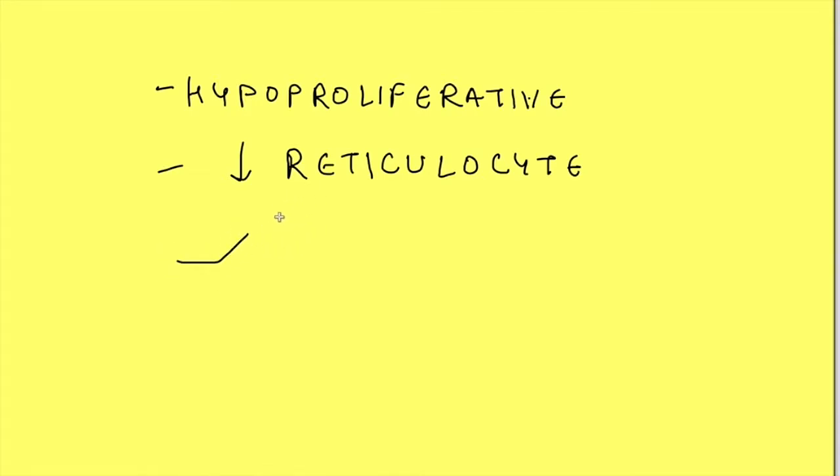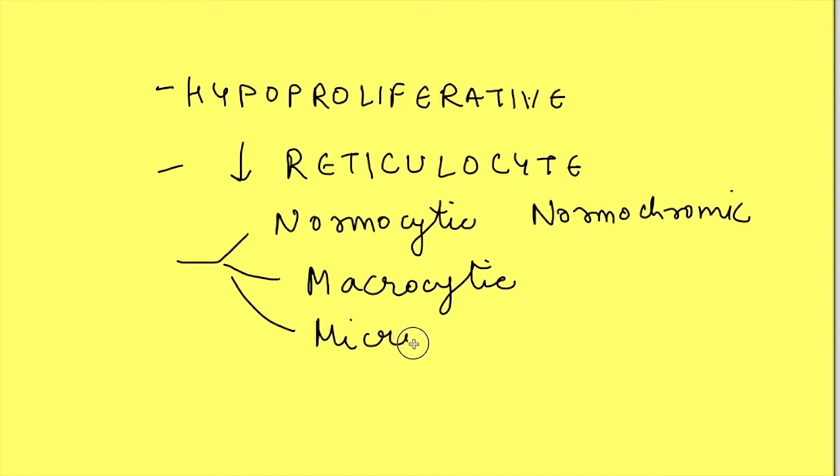That is they may be either of normocytic, normochromic type or macrocytic as in vitamin B12 deficiency, or maybe microcytic hypochromic type also.